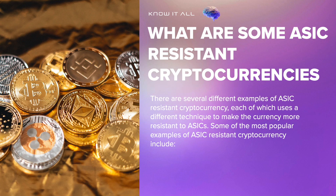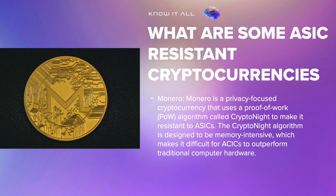There are several different examples of ASIC-resistant cryptocurrency, each using a different technique to make the currency more resistant to ASICs. Some of the most popular examples include Monero, a privacy-focused cryptocurrency that uses a proof-of-work, or POW, algorithm called CryptoNight. The CryptoNight algorithm is designed to be memory-intensive, which makes it difficult for ASICs to outperform traditional computer hardware.